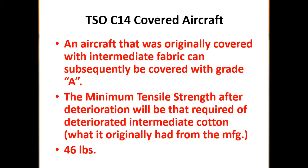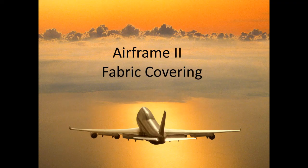Glider cloth is covered by AMS 3802. It has a 50 pounds per inch minimum tensile strength, and 35 pounds per inch deteriorated. It is for use with gliders under 8 pounds per square foot wing loading and a never-exceed speed below 135 miles per hour, with a 110 threads per inch maximum.